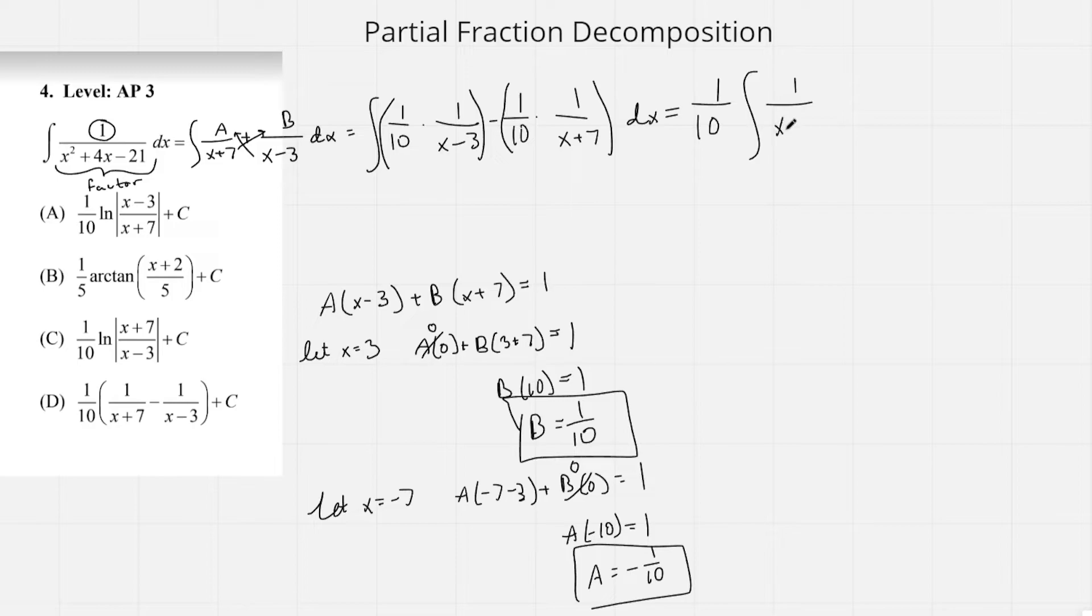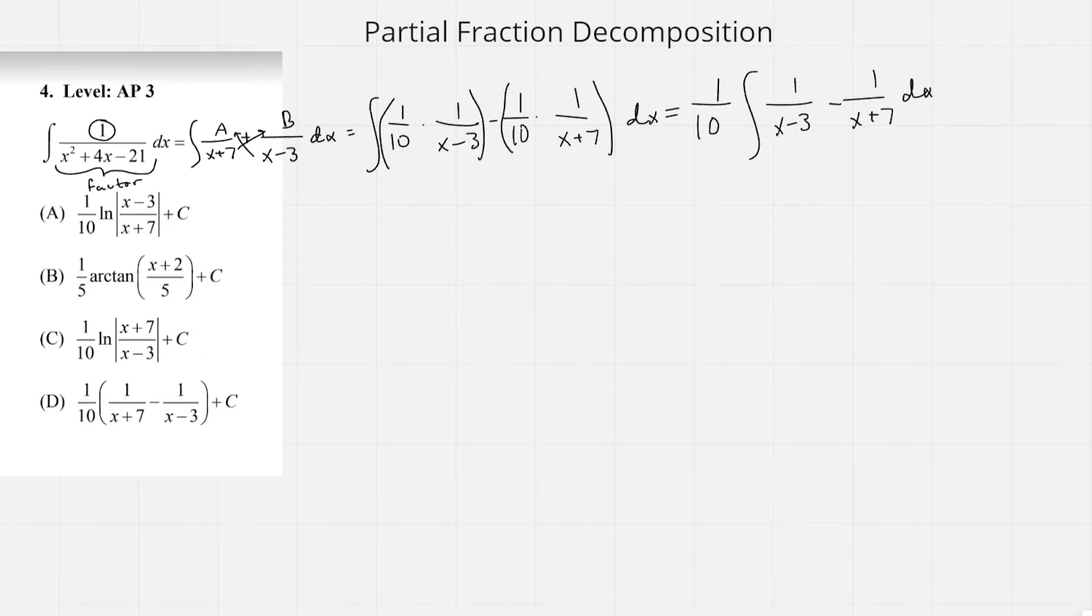So now we have 1 over (x minus 3) minus 1 over (x plus 7) dx. When you have two different variables like this, you can actually easily take them out or make them into their own integrals. So the 1 over 10 is going to stay on the outside, and then we're going to have the integral of 1 over (x minus 3) dx minus the integral of 1 over (x plus 7) dx.